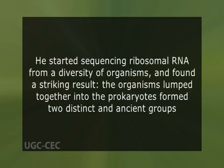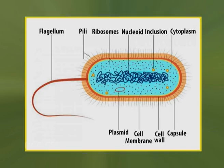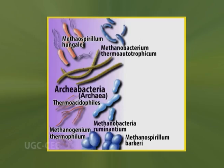At the time, it was difficult to read the sequences of the region of DNA that encoded ribosomal RNA, but it was possible to read bits and pieces of the RNA molecules themselves. Woese began sequencing ribosomal RNA from a diversity of organisms and found a striking result: the organisms lumped together as prokaryotes actually formed two distinct and ancient groups. One corresponded to the standard bacteria many people were familiar with; the other defined a collection of highly unusual and little-studied organisms. This group, originally named Archaebacteria, is now known as Archaea.